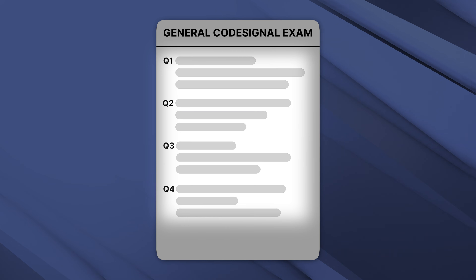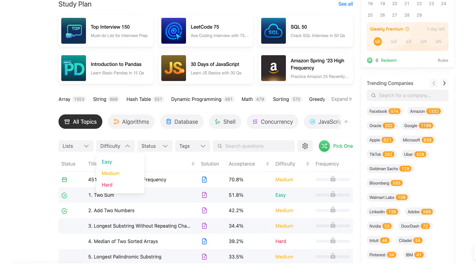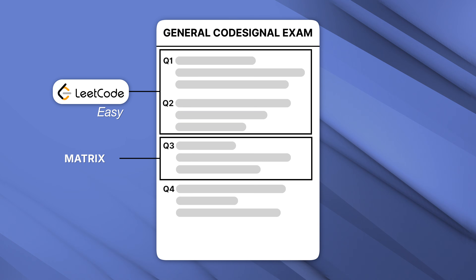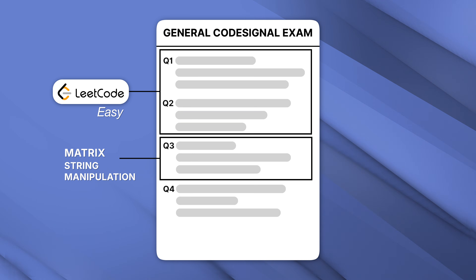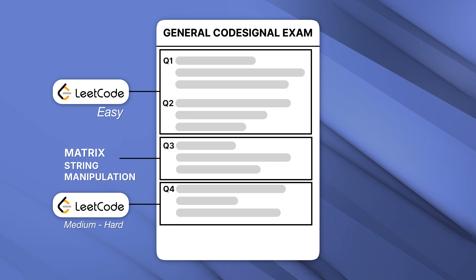What do the four questions actually look like? The first two questions are typically LeetCode easy — something that falls into the easy or early medium difficulty range. The third question will often be a matrix or a certain kind of string manipulation problem — that's a common trend I've seen, vetted among other students who've been taking CodeSignals. The fourth question doesn't follow a very strict pattern I've identified, but it's usually a medium to hard difficulty problem.